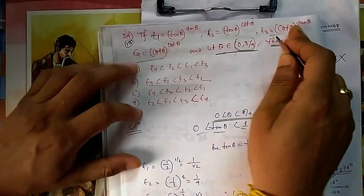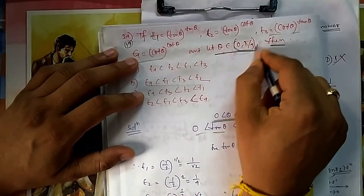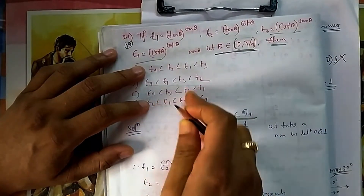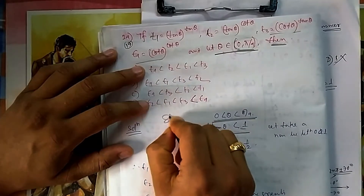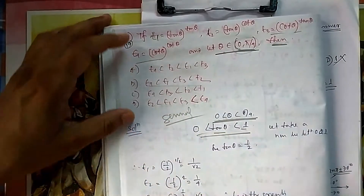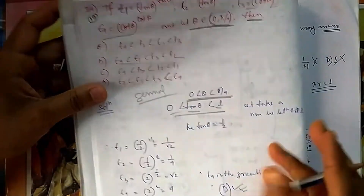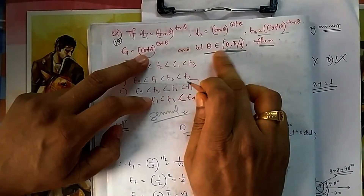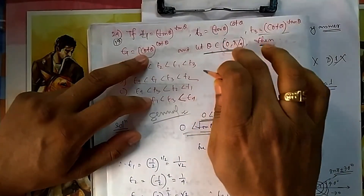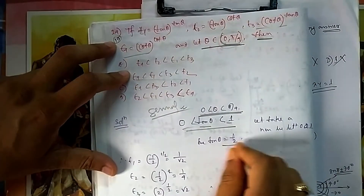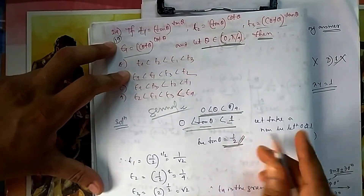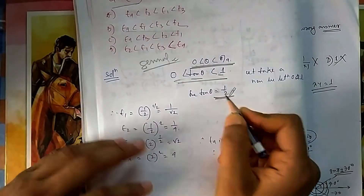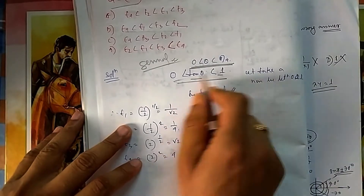For every value of theta between 0 to 45 degrees, this inequality should be satisfied. You can go for a general approach here because it is satisfying for all values of theta lying between 0 to π/4. So we can take any value between 0 to 1 — let me take one-half, since powers of one-half are easy to compute.